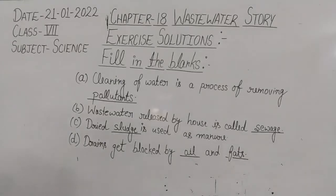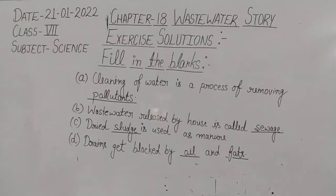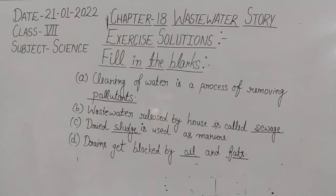Hamare gharon mein se wastewater jo release hota hai, usse hum log sewage kehte hai. Third blank: dried sludge is used as manure. Jo dried sludge hota hai, usko hum log as a manure use karte hai, aur yeh bahut achha hota hai humare crop production ke liye. Large amount mein nutrients paaye jaate hai. Next: drains get blocked by oil and fats. Jo bhi drains hain, yeh blocked ho jaate hain oil aur fats ki wajah se.